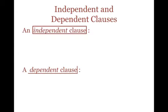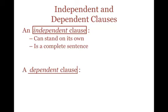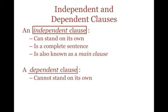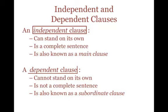First, let's talk about the difference between independent and dependent clauses. An independent clause can stand on its own and is a complete sentence. They're also called main clauses. In contrast, a dependent clause cannot stand on its own and is not a complete sentence. These clauses are also known as subordinate clauses.